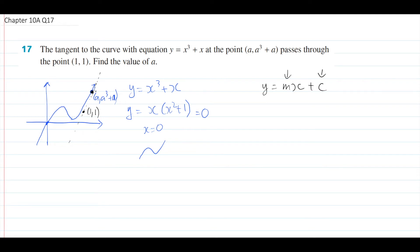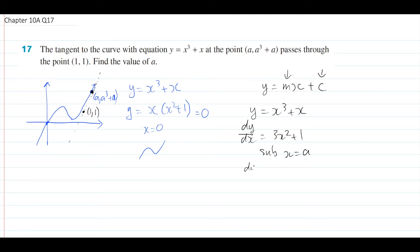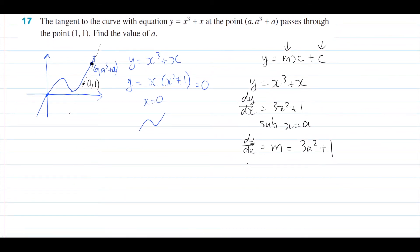A tangent is a linear line with the form y equals mx plus c. With these tangent questions you want to find m and c. Starting with m - m is the gradient of the tangent, and we know the tangent shares the same gradient as the curve at that specific point. So I differentiate my curve: if y equals x cubed plus x, then dy/dx equals 3x squared plus 1. Substituting x equals a gives us the gradient m equals 3a squared plus 1. So we can rewrite the tangent line as y equals (3a squared plus 1)x plus c.